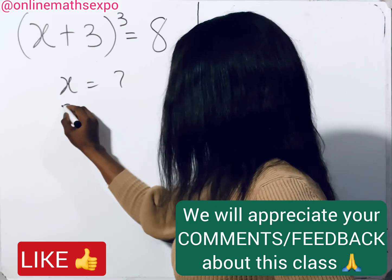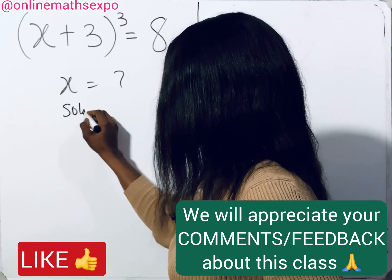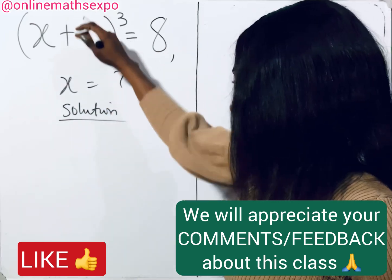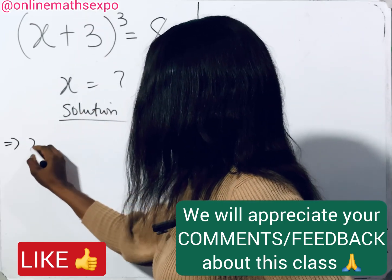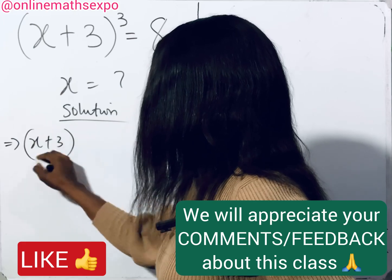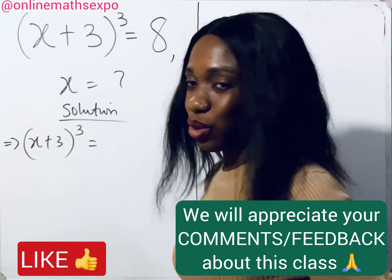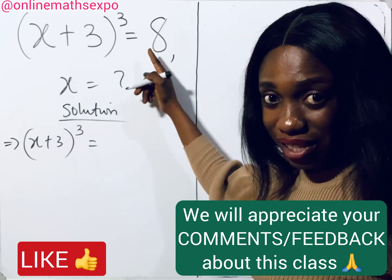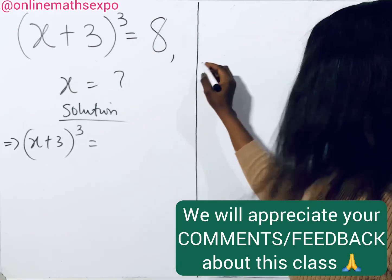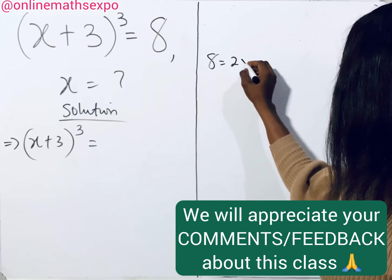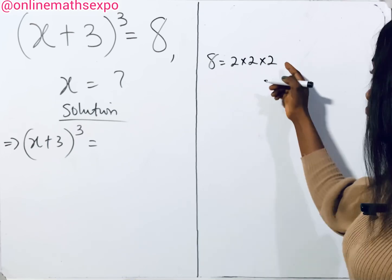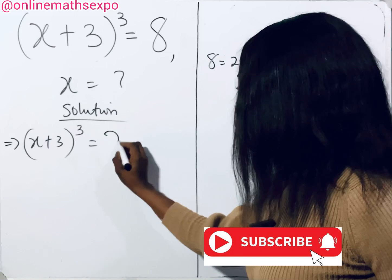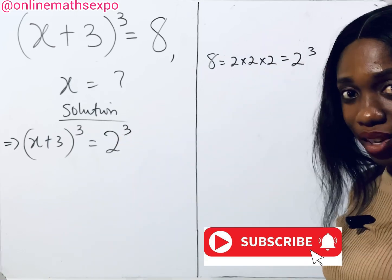To answer this question, let's begin with the solution. We have (x + 3)³ = 8. Because this power is three, we can rewrite eight knowing that 8 is 2 × 2 × 2. So we can rewrite this 8 as 2 to the power of three — so we have (x + 3)³ = 2³.